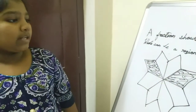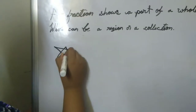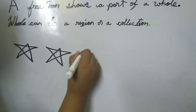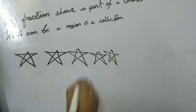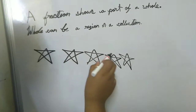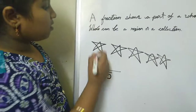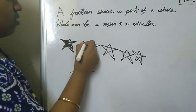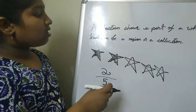Now we will go to another example — fractions of a collection. We have to count how many stars there are: 1, 2, 3, 4, 5. So 5 will come in the denominator. Now we have to count how many parts are shaded: 1, 2. Two parts are shaded, so 2 will come in the numerator. Therefore, 2 by 5 of the stars are shaded.